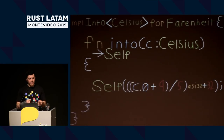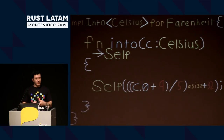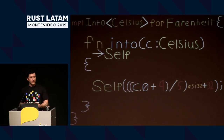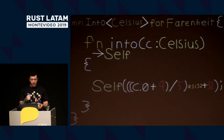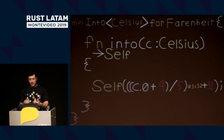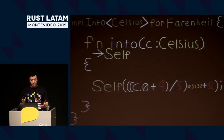It's useful to be able to convert things. We want to say Celsius is a unit of temperature and so is Fahrenheit — wouldn't it be nice to convert between them? We can do that with the Into trait. We can implement Into for Celsius to Fahrenheit, so it takes a Celsius as input and here's how we would convert it.